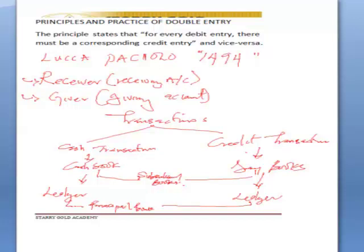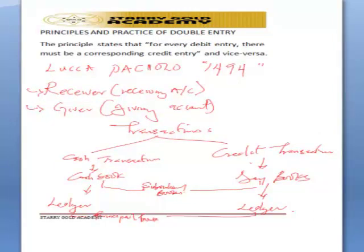The ledger is known as the principal book of account. The cash book and day books are known as the subsidiary books of accounts. In recording the double entry principle, we must know the giver and the receiver, irrespective of whether the transaction is a cash transaction or a credit transaction — we must identify who is the giver and who is the receiving party.